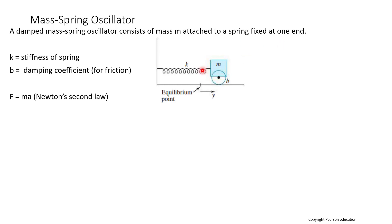A damped mass spring oscillator consists of a mass m attached to a spring fixed at one end. So here's our mass m, here's a spring it's connected to, and then the spring is fixed right here on one end.